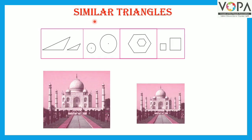Let's learn about similar triangles. The pairs of figures shown in each part have the same shape but their sizes are different. It means that they are not congruent. Such alike-looking figures are called similar figures.